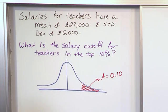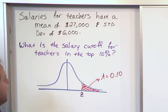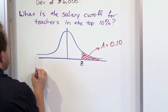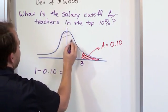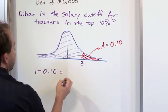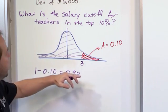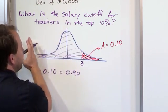Now we want to figure out what value of Z this corresponds to. We can't look it up exactly the way it sits now, so let's do it a little differently. What is 1 minus 0.10? That gives us the area to the left — all of this stuff — which is 0.90. So let's look up 0.90 in the chart; that would be the area to the left of Z.